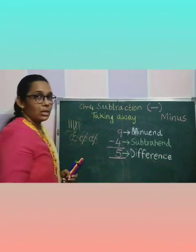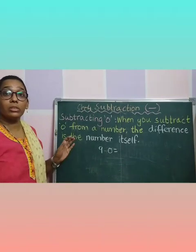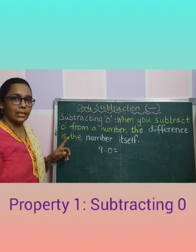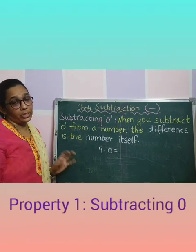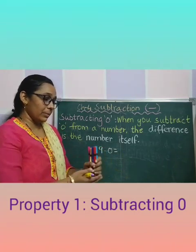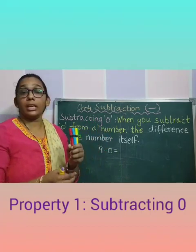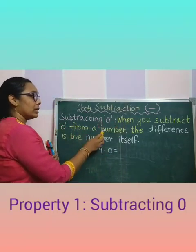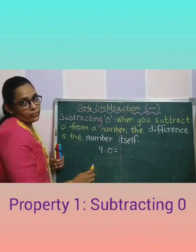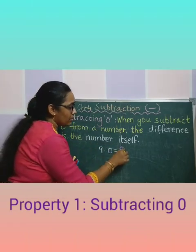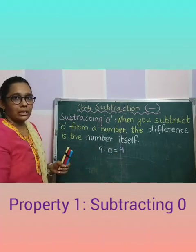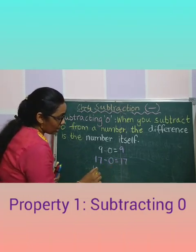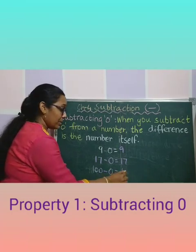Understood, children? Now we are going to learn about properties of subtraction. We have 3 properties. This is the first one: subtracting 0. Whenever you subtract 0 from a number, the difference is the number itself. We have 9 color pens and we are taking away 0 — means we are not taking anything away. So 9 minus 0, you will get 9. See, 17 minus 0, what you will get? The same number. 100 minus 0, what you will get? The same number.